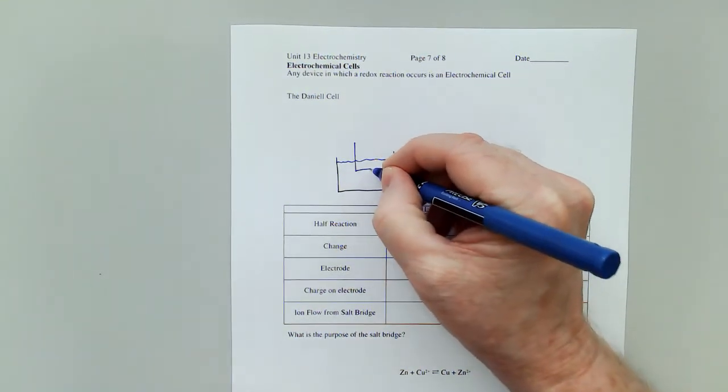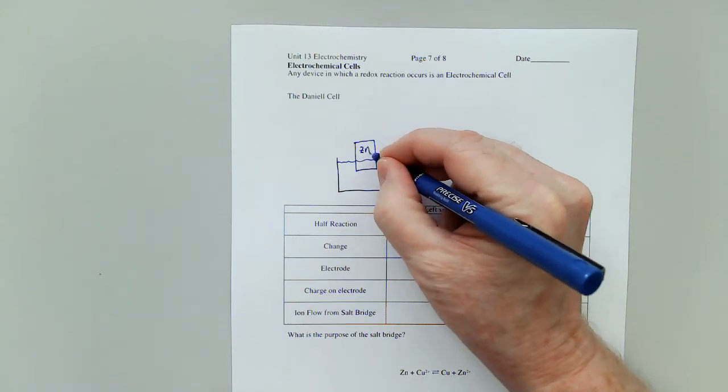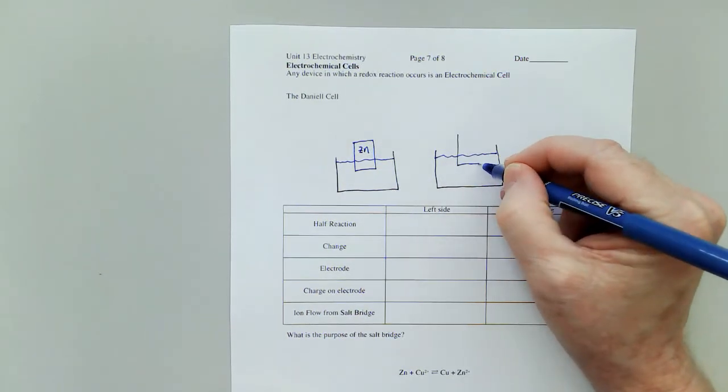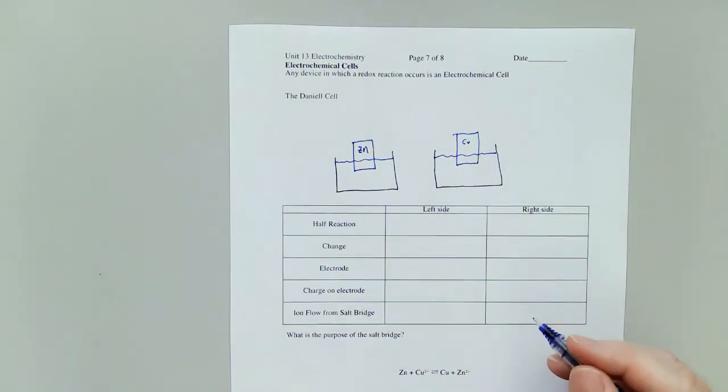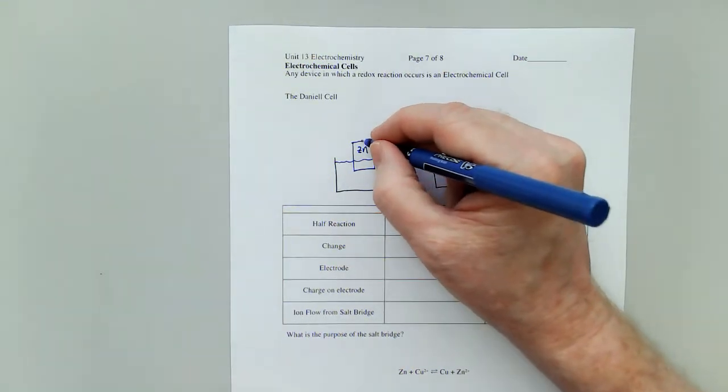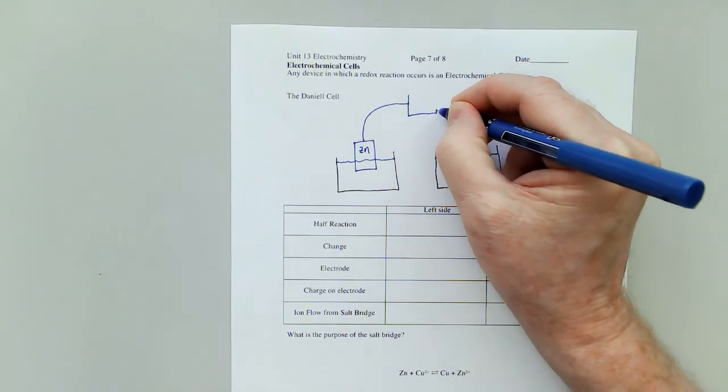And then we're going to put a piece of metal in. So on this side, we'll make the piece of metal zinc. And on this side, we will make it copper.